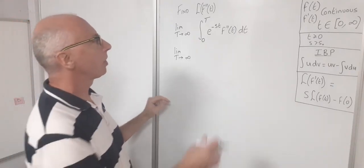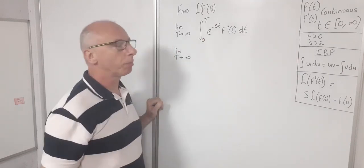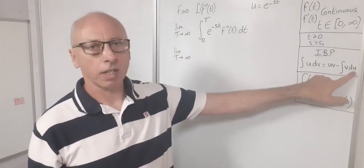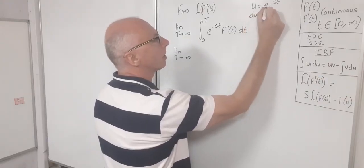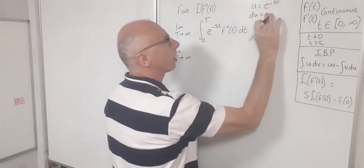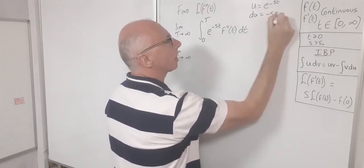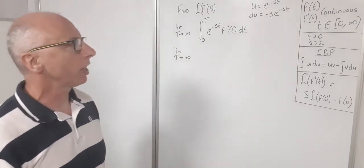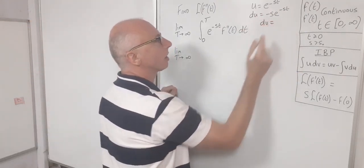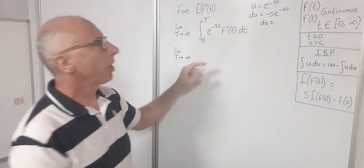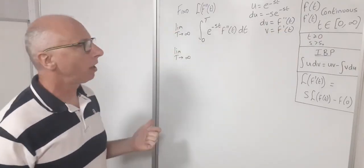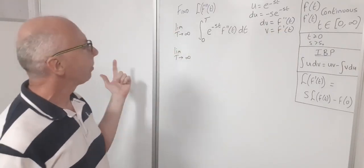So u equals e to the minus st. For du, we take the derivative with respect to t: du equals minus s times e to the minus st. For dv, we choose f double prime of t, and therefore v is simply f prime of t by the fundamental theorem of calculus. Now we have everything to set up and find our result.